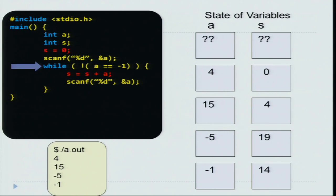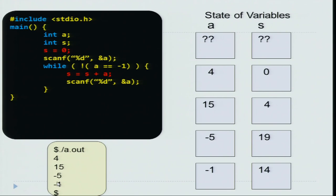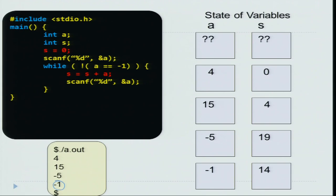Since the number read is minus 1, you go back to the loop and the condition becomes false. You exit out of the loop and print that the sum is 14. When you verify it by hand you would see that 4 plus 15 plus minus 5 is 14, so the program has executed correctly. The important thing to note is that the final minus 1 is not summed up — it is used as the end of the input. You should not compute the sum including minus 1; minus 1 is excluded and the program executed correctly.